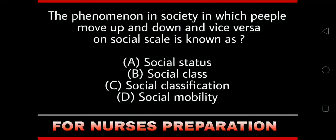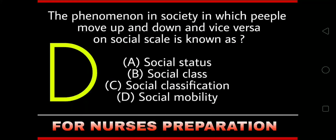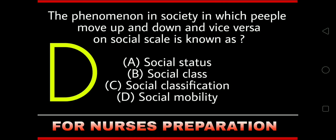The phenomena in society in which people move up and down on a social scale is known as — social status, social class, social classification, or social mobility. The right answer is Option D: social mobility.